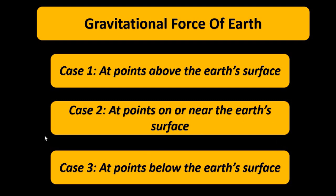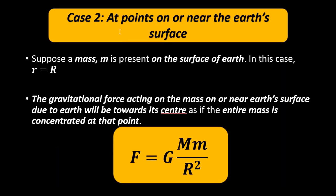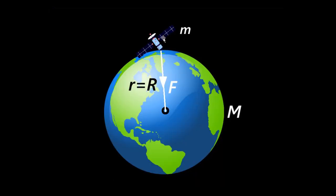Here the main point is case 2, where we are considering this second case at points near or on the surface of the earth. Under that case 2, we have objects which are close or near the surface of the earth and their separation distance is almost equal to the radius of the earth.